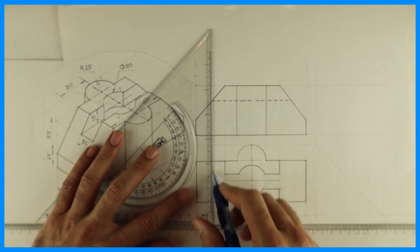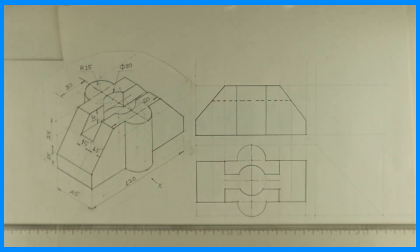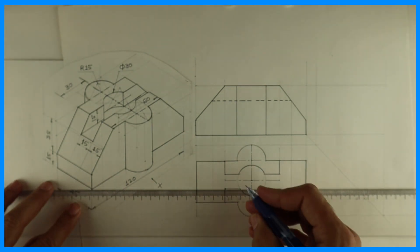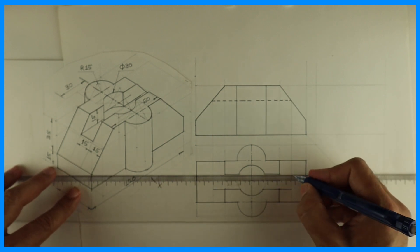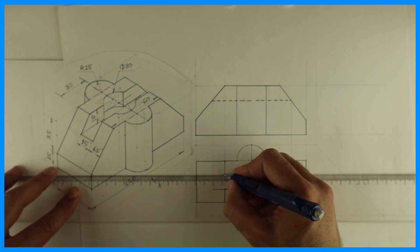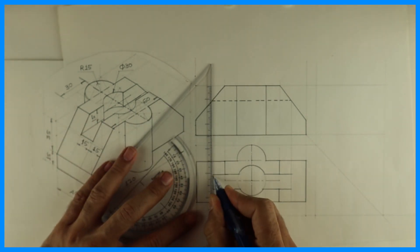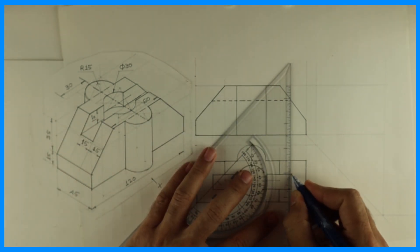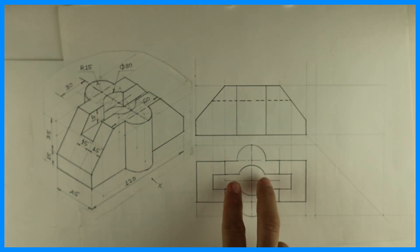See, wherever it is intersecting with that slope. From here we can project down. So it will be like this. Now see, in top view we can extend.